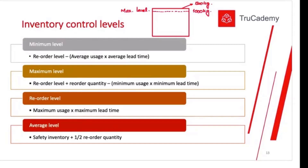How can we calculate the maximum level? The formula is: reorder level plus reorder quantity, minus minimum usage multiplied by minimum lead time. When you solve this equation with the given information, you will get the maximum level, which may be expressed in units, kilograms, or whatever unit is applicable.